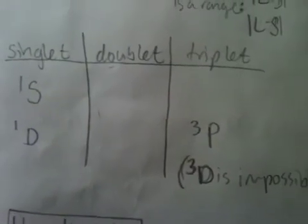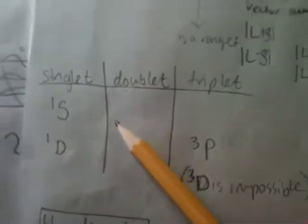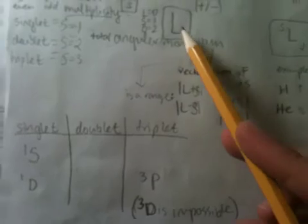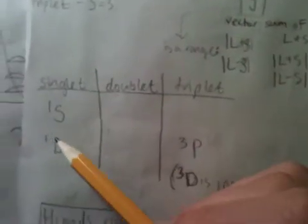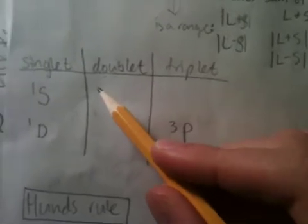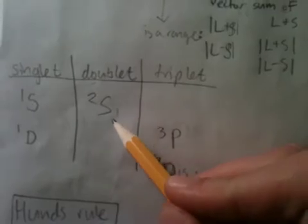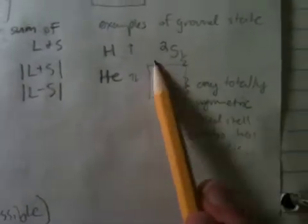Now, some examples of what these could look like, you know, what these term symbols could look like are 1S, 1D. You know, you could envision this having 2S, 1 half, for example, like over here, what we have for the hydrogen.